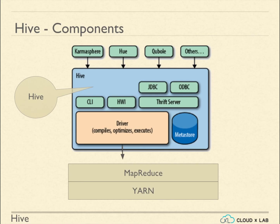The Hive driver takes the query written in HiveQL — that is, Hive Query Language — compiles it into MapReduce, optimizes and executes it. Hive stores metadata of each table, such as their schema and location, in a relational database like MySQL or PostgreSQL.